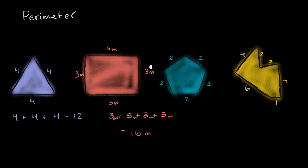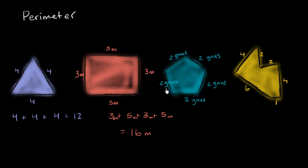Now what about this pentagon? Let's say that each of these sides are two — and I'll make up a unit here. Let's say there are two Gnus. That's a new unit of distance I have just invented. So what is the perimeter of this pentagon in Gnus? It's two plus two plus two plus two plus two Gnus. Five sides each have a length of two Gnus, so the perimeter — you could add two repeatedly five times, or just say this is five times two Gnus, which is equal to 10 Gnus.